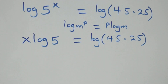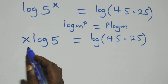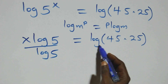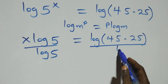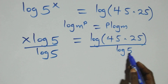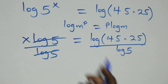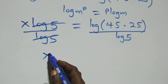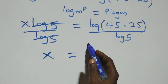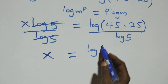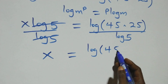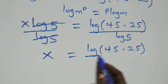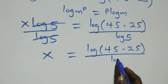At the next step, we divide both sides by log 5. Divide this side by log 5 and also divide this side by log 5. Log 5 cancels each other, and we have x equals to log 45 times 25 over log 5.